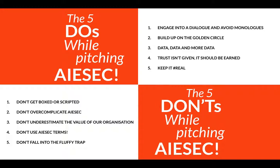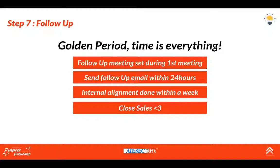Step seven: follow-up. After your first meeting, it's the crucial golden period — 90% is already confirmed whether they'll be your partner or not. Make sure the follow-up meeting is set during the first meeting. At the end of the meeting, give a clear call to action from both parties and set the next meeting together right then. Send a follow-up email within 24 hours. The best range for the next meeting is one week. In that week, do internal alignment — sit down with your IGV, share what the partner wants. When you go to the second meeting, it should be close to ready.